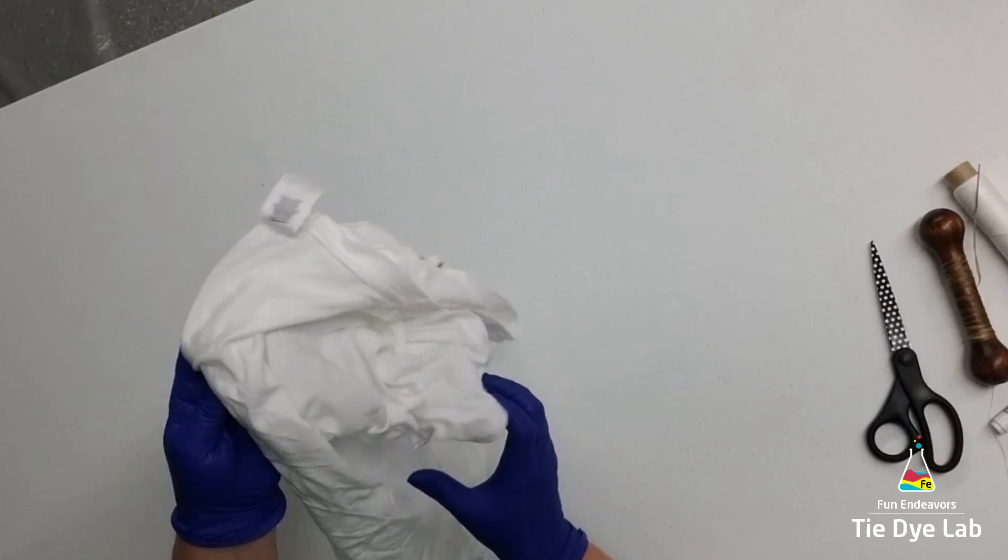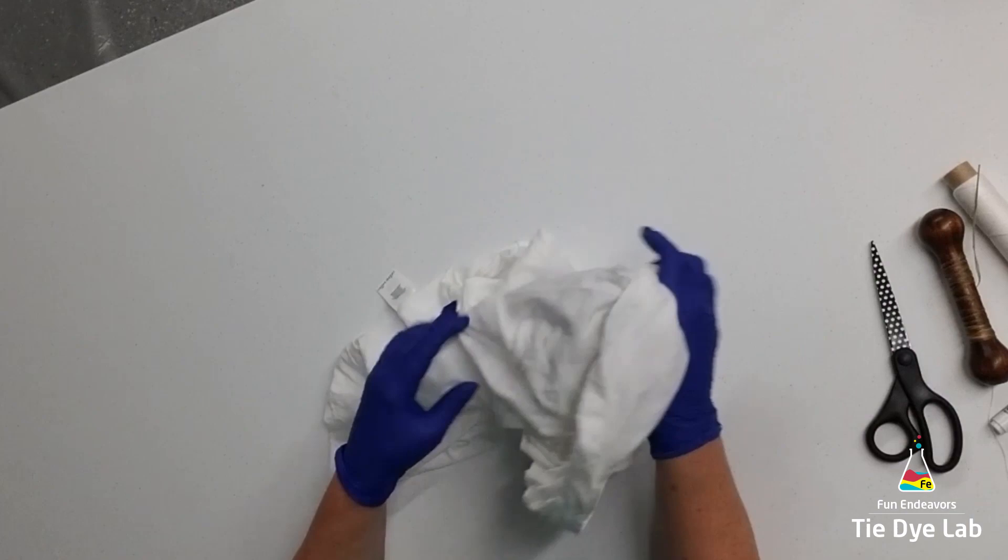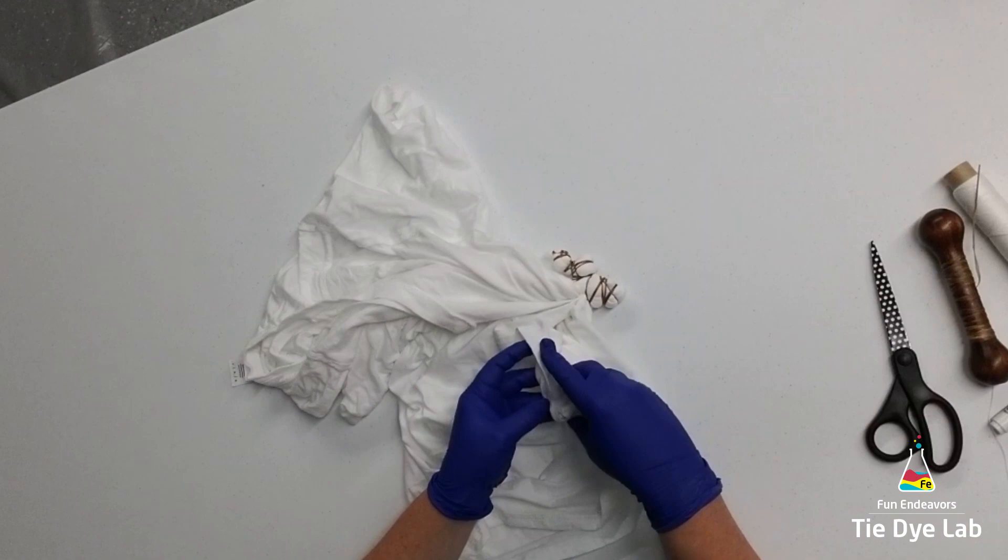Okay, now that I have my mandala portion of the shirt tied up, I'm just going to take the rest of my shirt and I'm going to scrunch it, and then I'm going to tie that part up with some rubber bands.